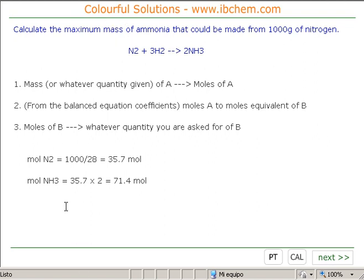Alright? So, we must convert moles to mass. Well, to convert moles to mass, we have to use mass equals moles times relative mass. Well, the relative mass is of ammonia. Well, ammonia is nitrogen, which is 14, and 3 hydrogens, 17. So, it's 71.4 times 17.